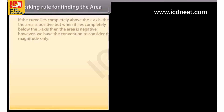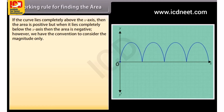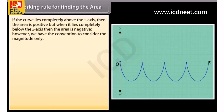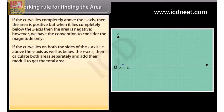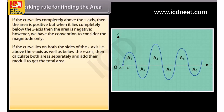If the curve lies completely above the x-axis, then the area is positive. But when it lies completely below the x-axis, then the area is negative. However, we have the convention to consider the magnitude only. If the curve lies on both sides of the x-axis — above as well as below — then calculate both areas separately and add their moduli to get the total area.